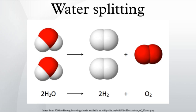Electrolysis of water is the decomposition of water into oxygen and hydrogen gas due to an electric current being passed through the water. In chemistry and manufacturing, electrolysis is a method of separating chemically bonded elements and compounds by passing an electric current through them. One important use of electrolysis of water, or artificial photosynthesis, is to produce hydrogen.